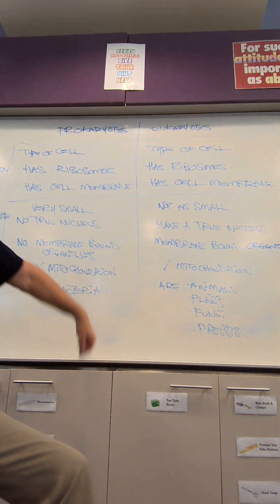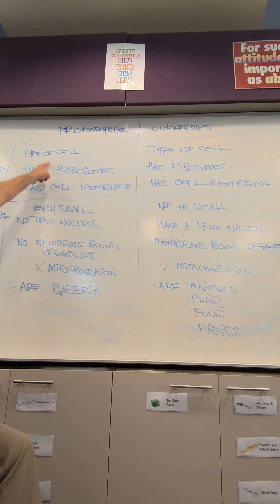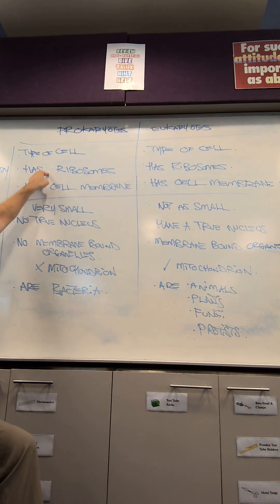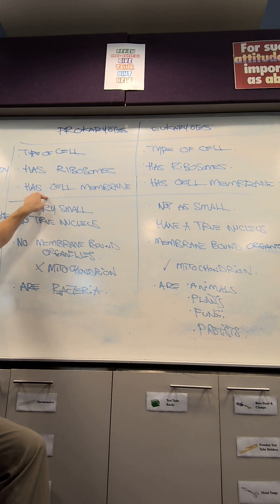Today, we're looking at eukaryotes and prokaryotes. First of all, we're going to look at the similarities. They're both a type of cell. They both have ribosomes. They both have a cell membrane.